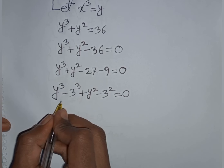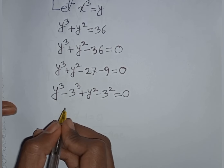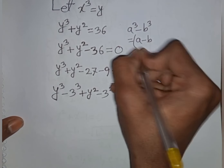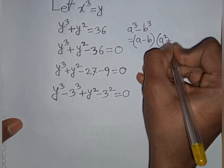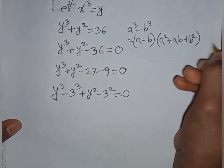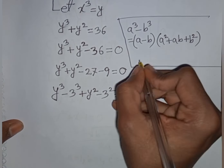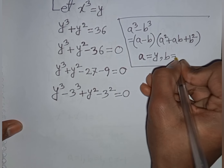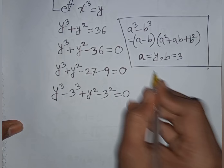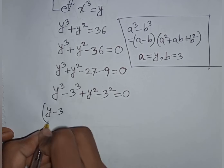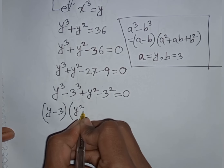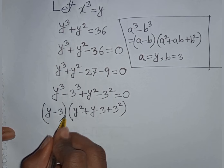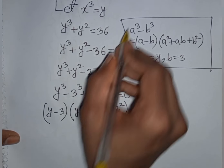Applying the formula a^3 − b^3 = (a − b)(a^2 + ab + b^2) with a = y and b = 3: y^3 − 3^3 = (y − 3)(y^2 + 3y + 9).